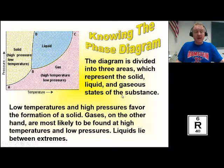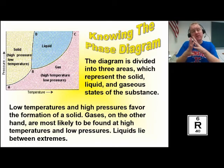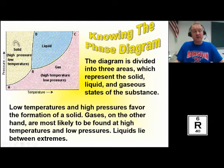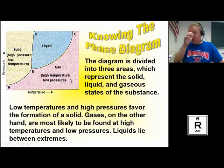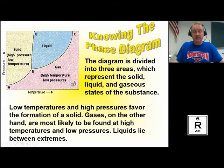Low temperatures and high pressures favor the formation of a solid. When you move toward low temperature and high pressure, the molecules can't move around much and they lock into the solid state. Gases on the other hand are most likely found at high temperatures and low pressures — low pressure means a lot of freedom, and high temperature means a lot of kinetic energy. So the gas region is toward high temperature and low pressure on the diagram.